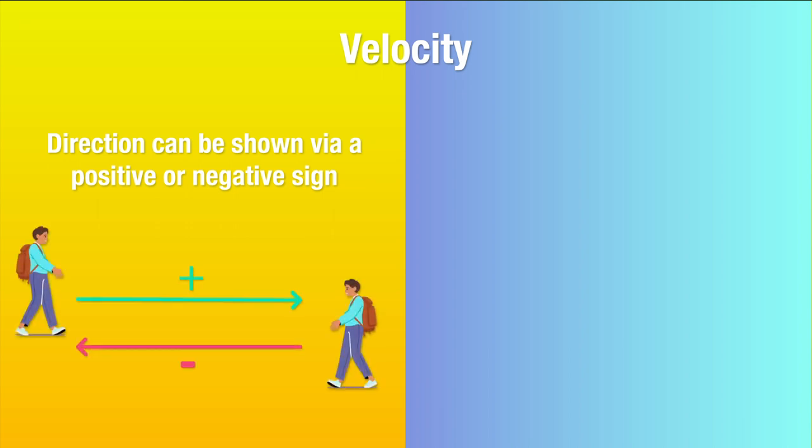Now the rate of change of displacement is called velocity, which is the vector version of speed. Velocity shows how fast an object is moving and in what direction with respect to a reference point. Now it's important to note that if there is more than one moving object, they should all be in the same direction of our chosen reference point.